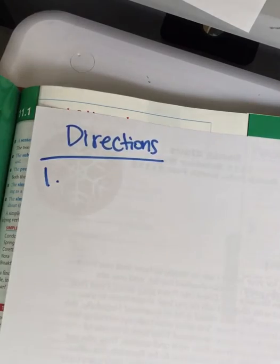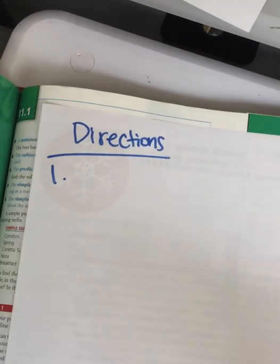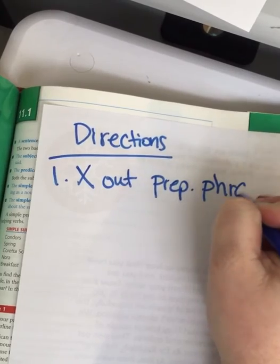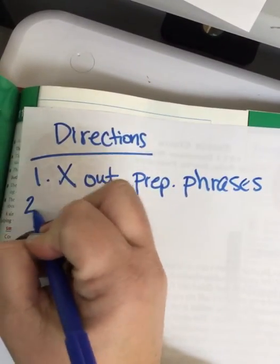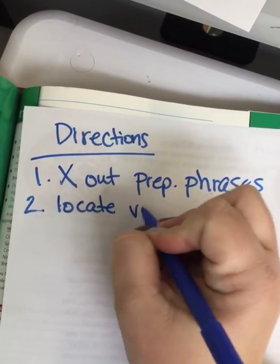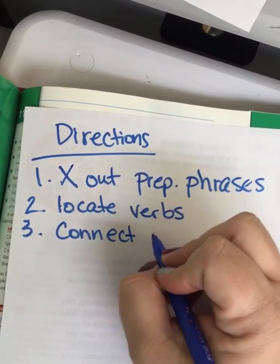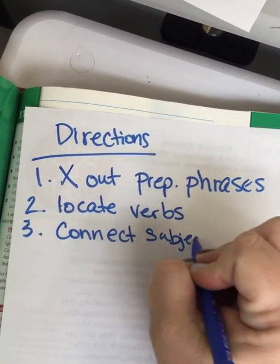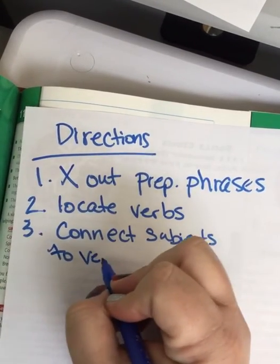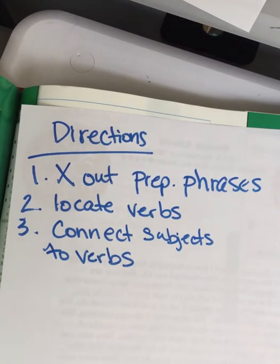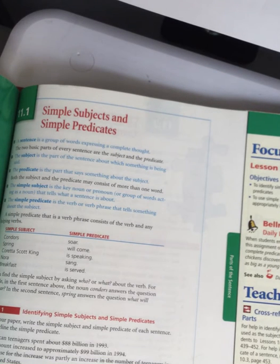Directions for sentence analysis. The first one is: cross out prepositional phrases. Number two: locate verbs. Number three: connect subjects to verbs. We're going to add more steps to that, but for today that's all we need. From now on, on your worksheets, I expect you to follow those three directions. Let's look at exercise one on page 497.